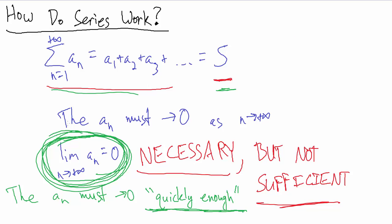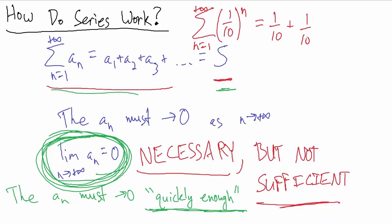So that's an explanation of how we can add up infinitely many numbers and still get a finite value. Let's see a quick concrete example. Let's say we have the sum from n equals 1 to positive infinity of one-tenth to the n. This would be one-tenth to the first, which is just one-tenth, plus one-tenth squared, plus one-tenth cubed, plus dot dot dot.